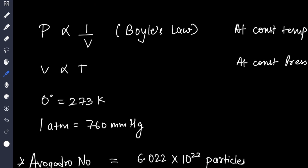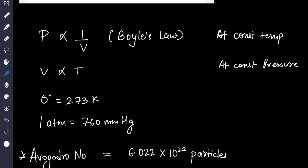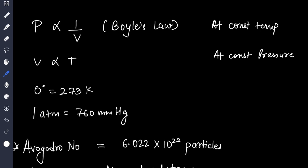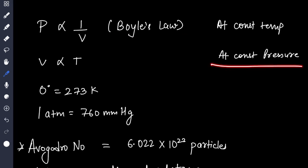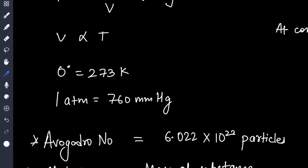Moving to the mole concept, the numerical part is very easy and scoring. You can practice from previous year question papers. See Boyle's law: P is inversely proportional to volume. P is the pressure when the temperature is constant, this is Boyle's law. Then we have Charles law: at constant pressure V is directly proportional to T. 0 degree Celsius is equal to 273 Kelvin. 1 atm pressure is equal to 760 mm Hg.